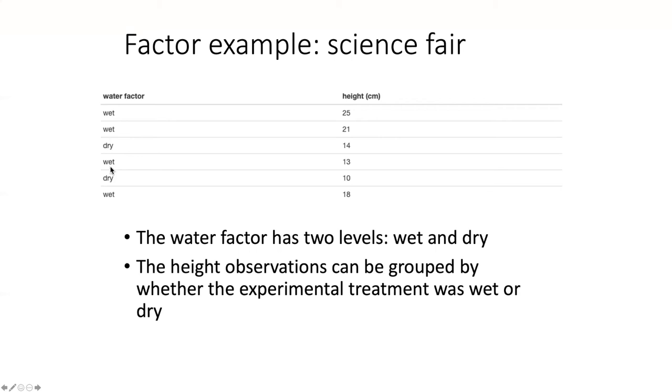That is the independent variable. It is also a discontinuous variable. The dependent variable, which is the one that we're measuring in the experiment, is a continuous value. It's numbers that range continuously from zero to infinity, and we can group these height observations by whether the experimental treatment that we used was wet or dry. So the wet and dry levels of the water factor are used to divide the height variable into categories.